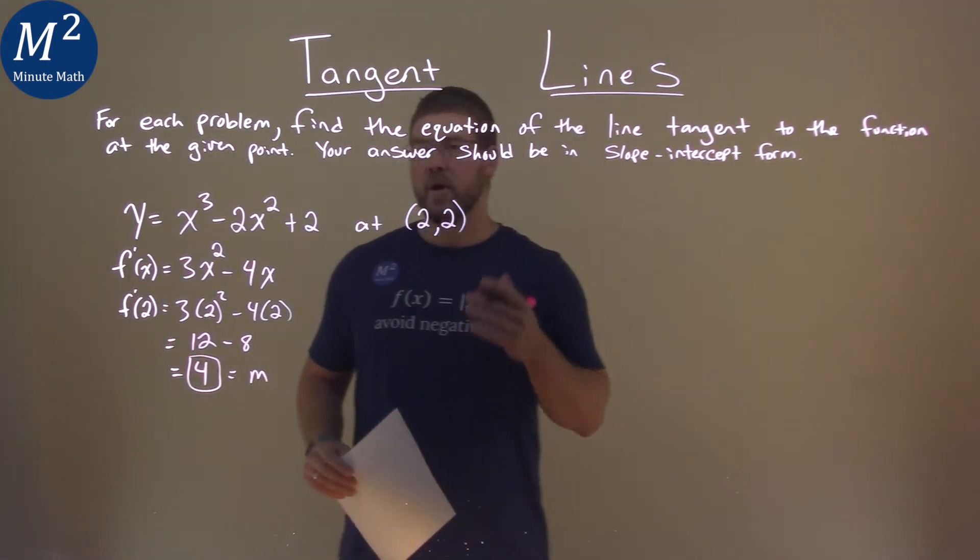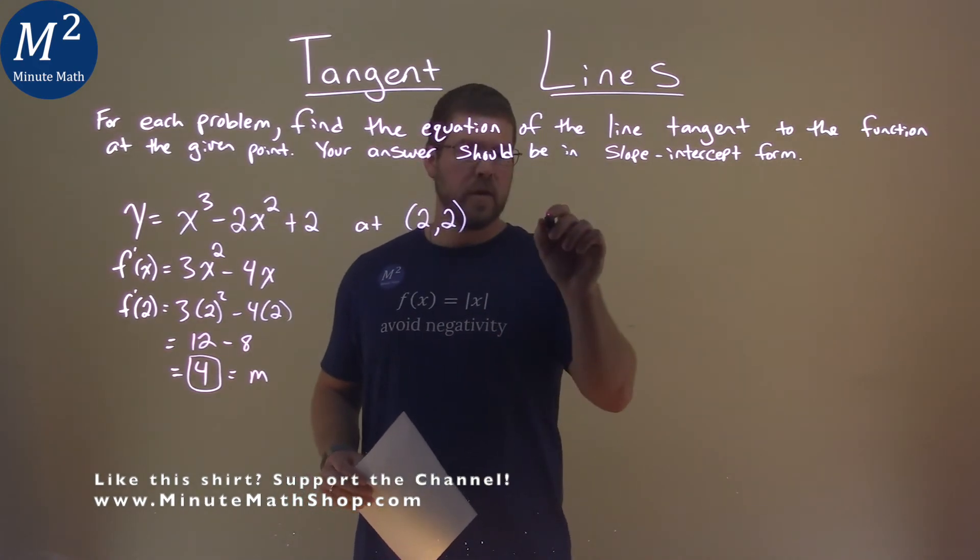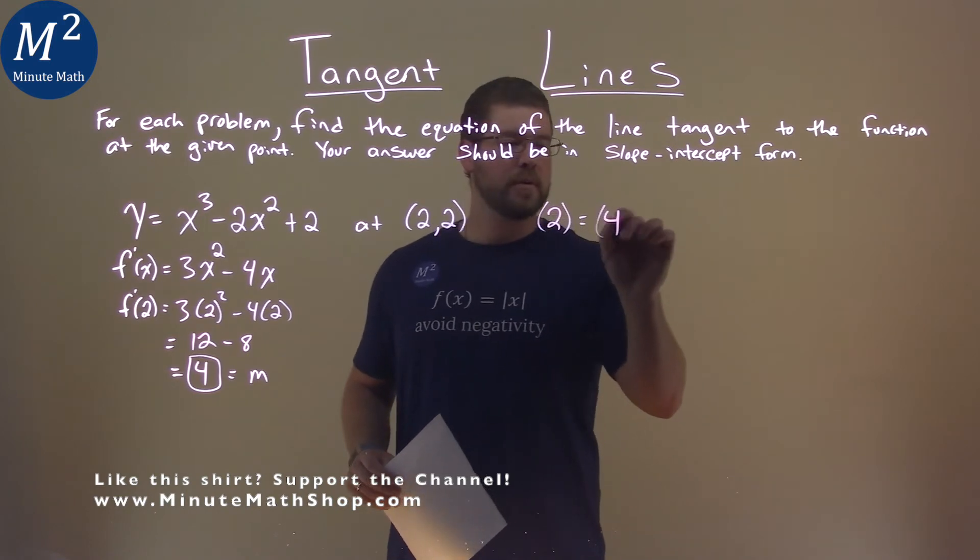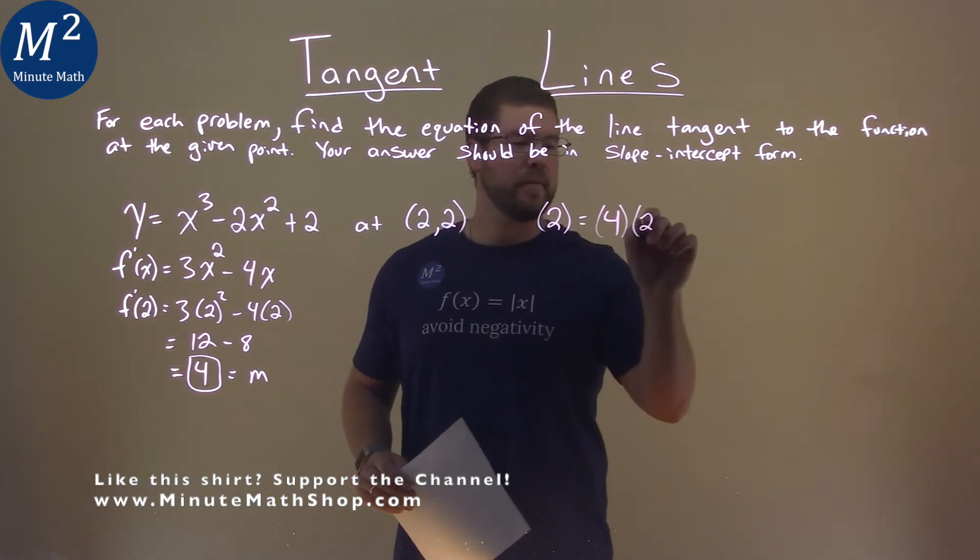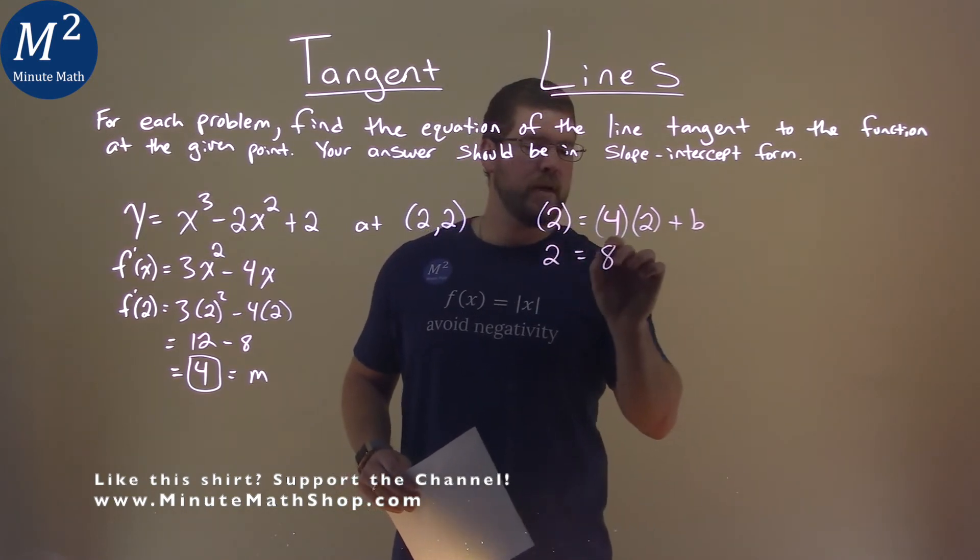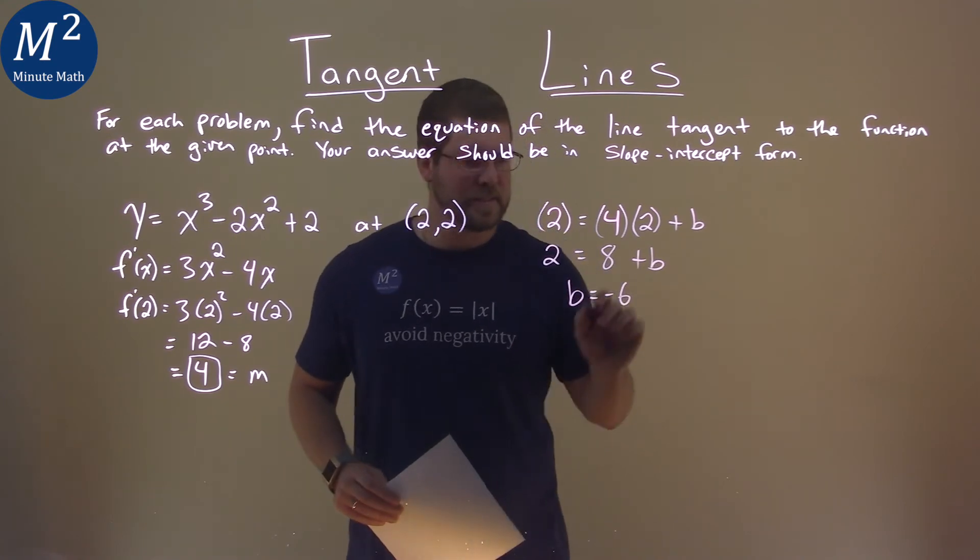Well, now we want to find our b value. So we use our formula y equals mx plus b. 2 for y is equal to our slope, 4, times our x value, which is 2 again, plus b. 4 times 2 is 8 plus b. Subtract 8 from both sides, and b is negative 6.